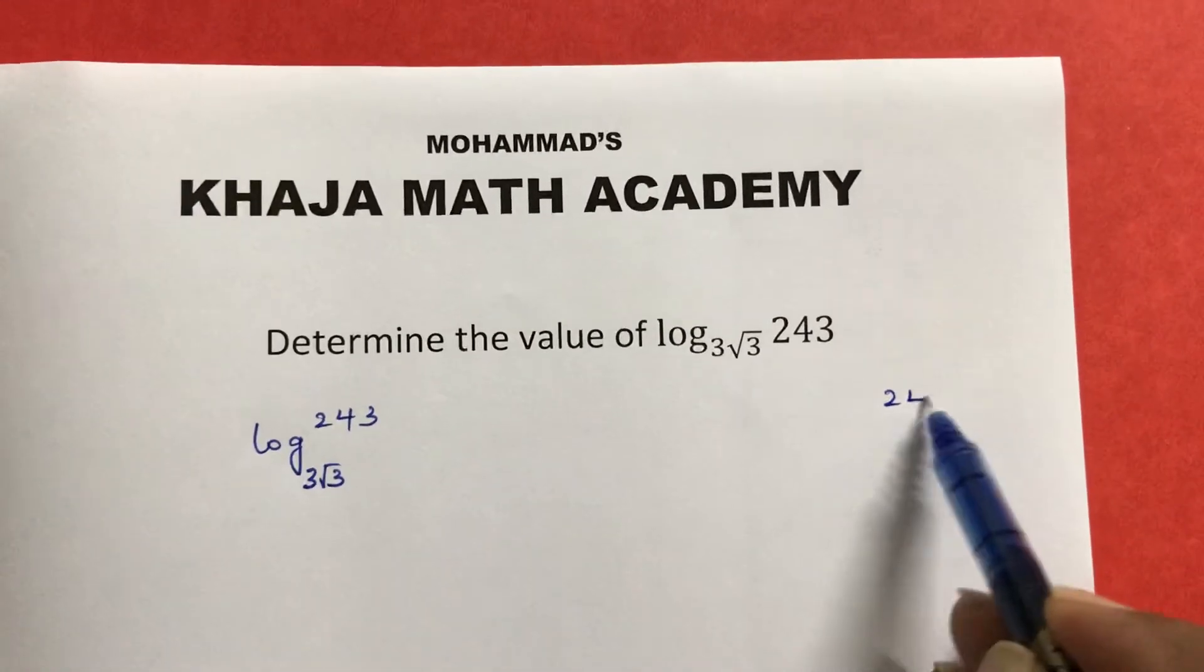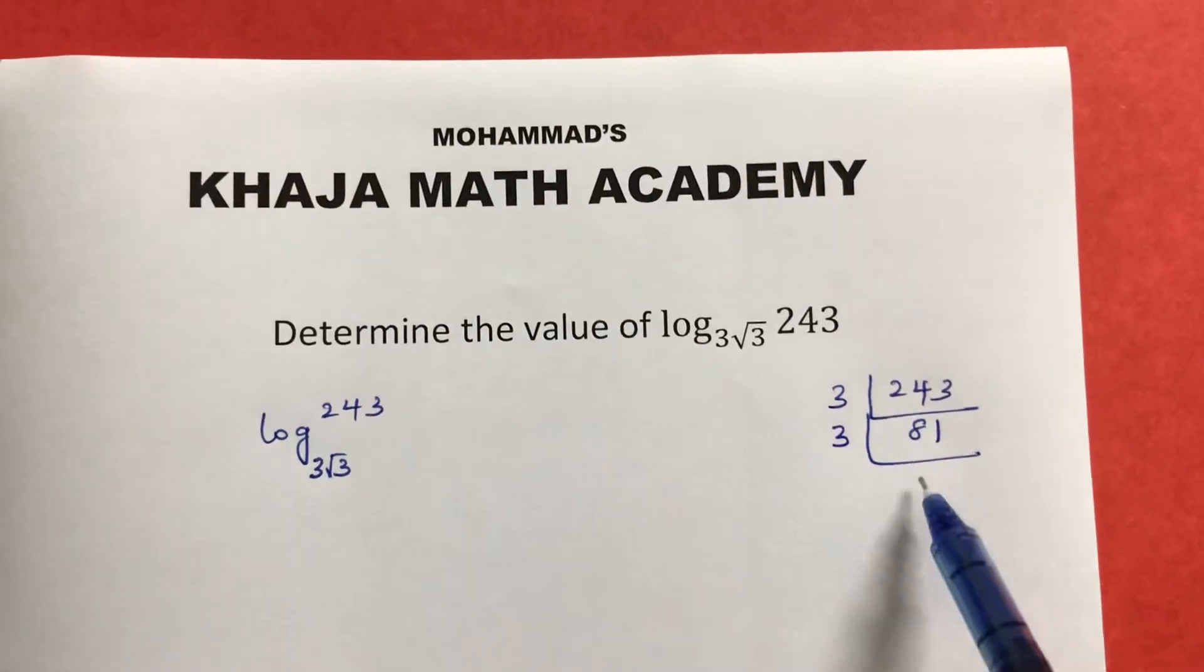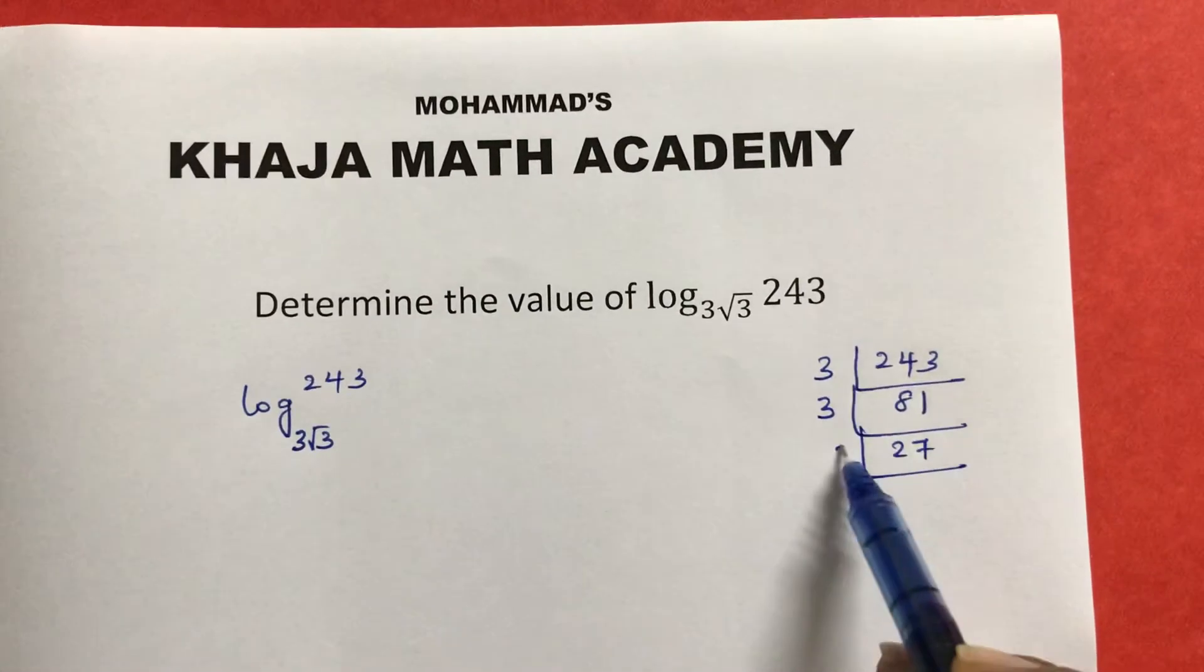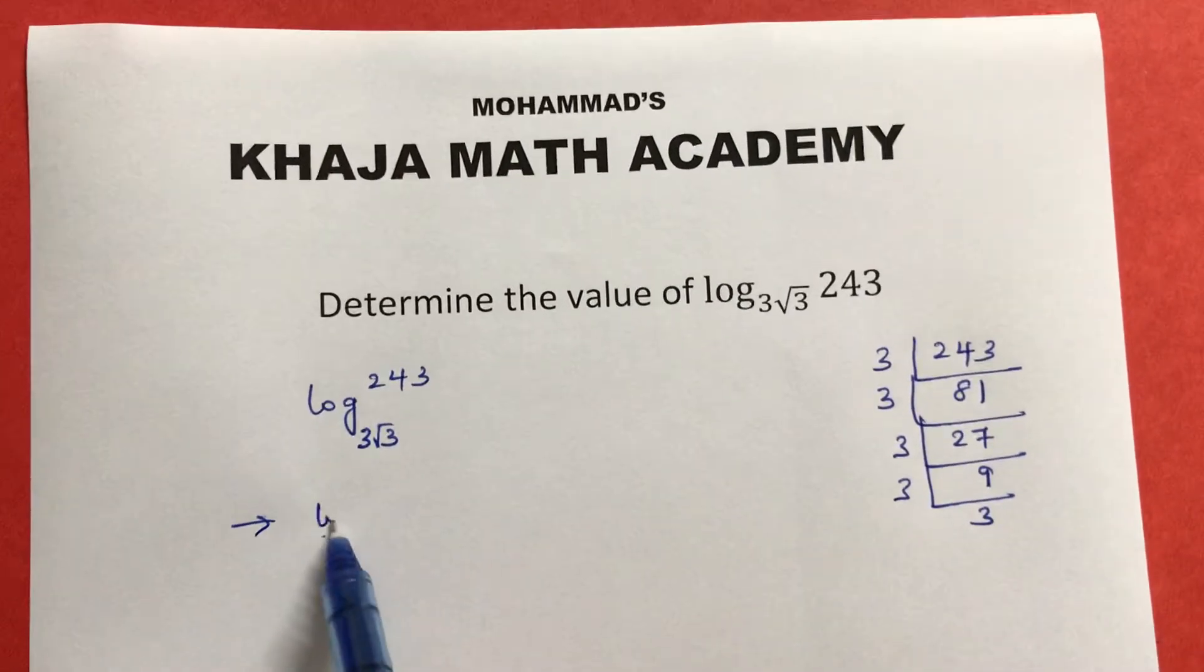243, if you do prime factors: 3 times 81, 3 times 27, 3 times 9, 3 times 3.